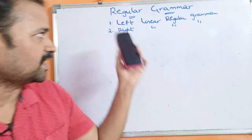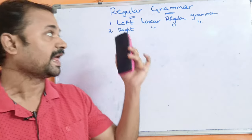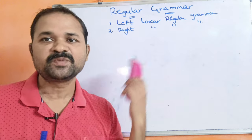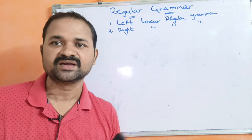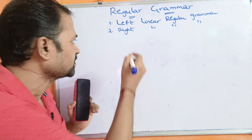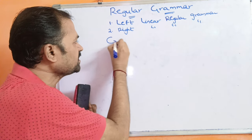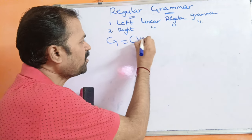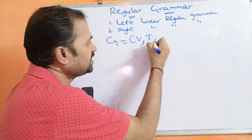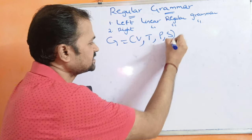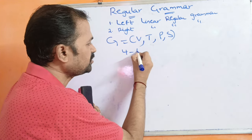Now let us see about regular grammar and its types. Before discussing regular grammar, let's see what is a grammar. A grammar is represented using G with the help of 4 tuples: V, T, P, S.